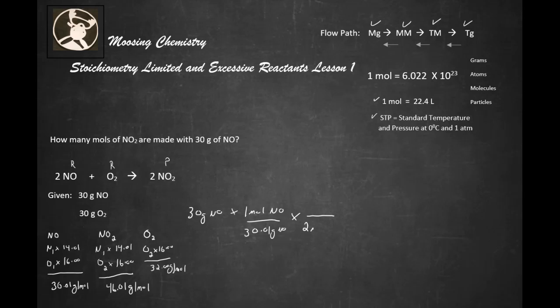2 moles of NO over 2 moles of NO2. Now we want to put that into grams of NO2, and now we're going to put 46.01 grams of NO2 on top. Let's cancel the math out here. When we do that, we get that to be roughly 45.55.